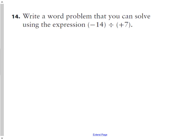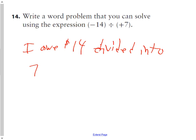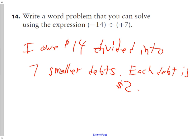Question 14 says write a word problem you could solve using the expression negative 14 divided by positive 7. I owe $14. I want to divide it into seven smaller debts. Each debt is $2. That's mine. Yours can be different. It's a negative 14 degrees out. No, that doesn't work either. This is the best one. There's a whole lot of different ones you can have, but if you have something different, just think of it that way.